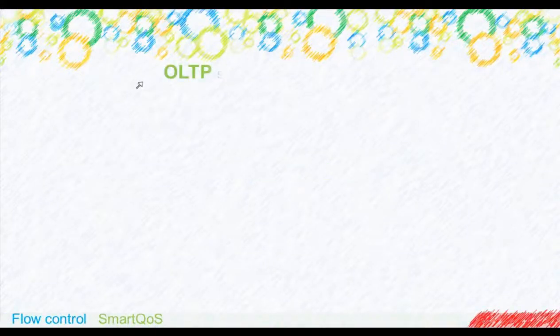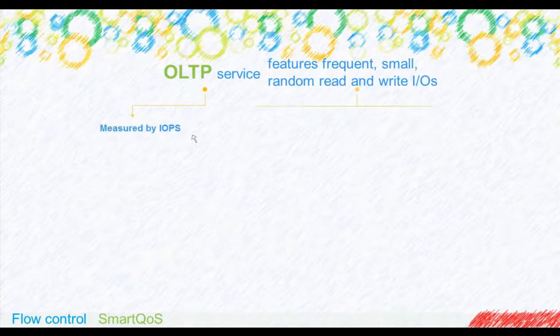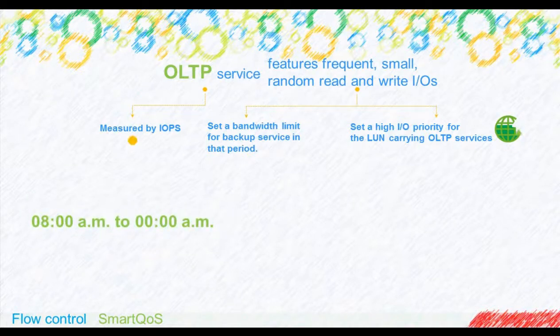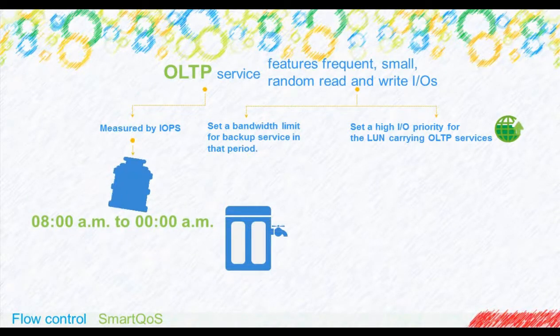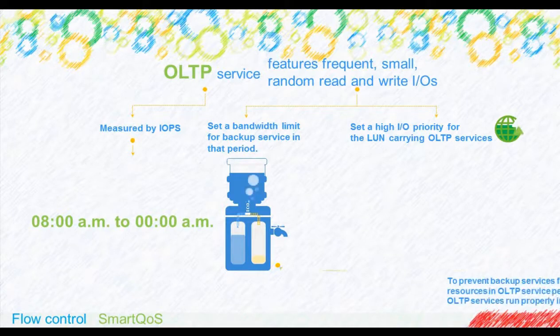Use SmartQoS to optimize storage resource configuration. OLTP services feature frequent, small, random read and write IOs, which are measured by IOPS. To prevent backup services from competing for storage resources in OLTP service peak hours, and ensure that OLTP services run properly in daytime, set a high I/O priority for the LUN carrying OLTP services, and set a bandwidth limit for backup services in that period.